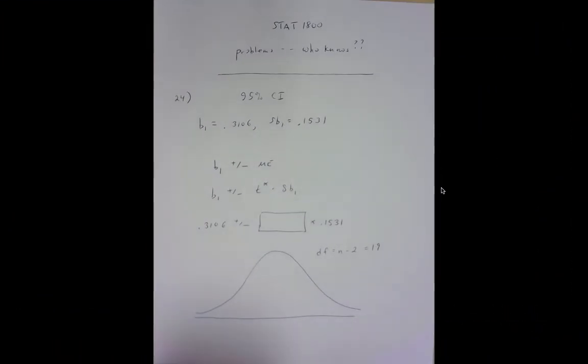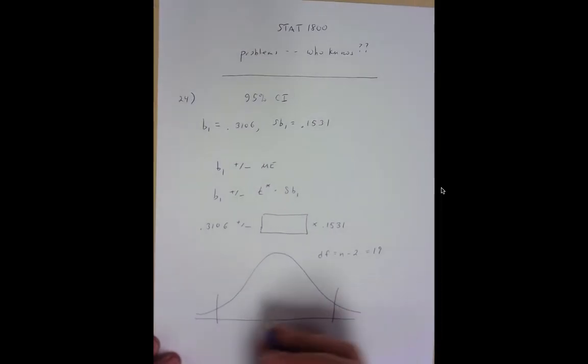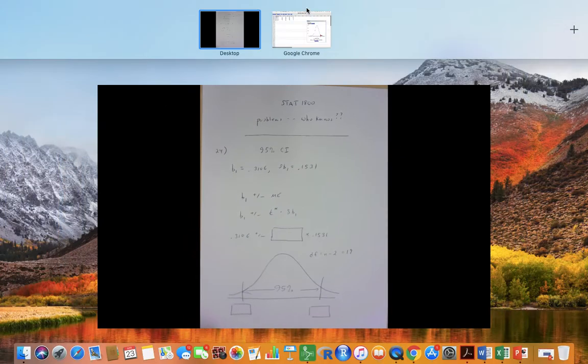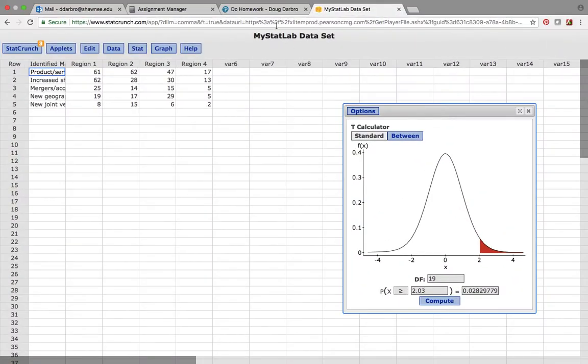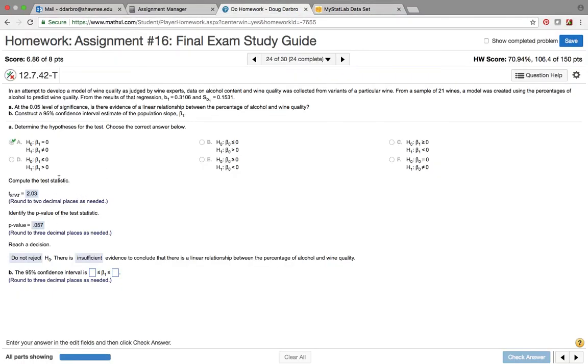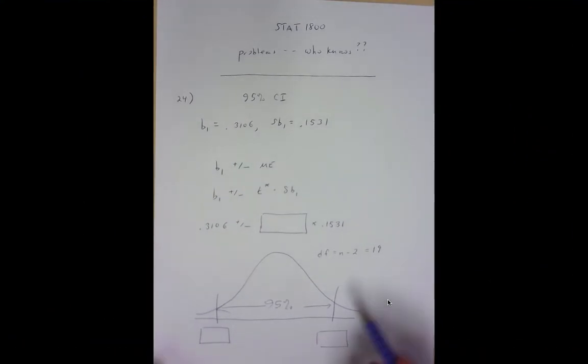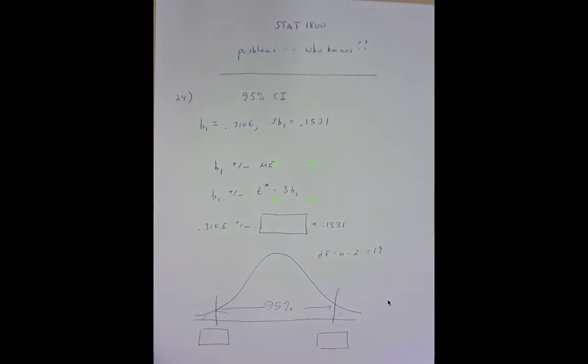And what we want to do is we want to find essentially the two values between which 95% of our distribution falls. Now why 95%? Because our problem says we're testing at the 0.05 level, so we're going to have 0.05 total in this tail and this tail.